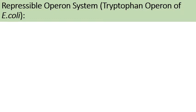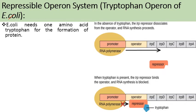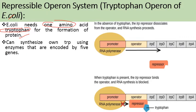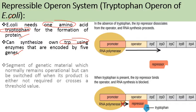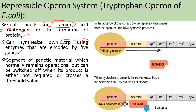The tryptophan operon in E. coli is a repressible operon system. Tryptophan is required for protein formation in E. coli, and E. coli can synthesize its own tryptophan using certain enzymes coded by five structural genes. This functional segment of DNA forming the operon consists of various genes already discussed. The segment of genetic material normally remains operational — it works continuously — but can be switched off when its product is either not required or crosses a threshold value.